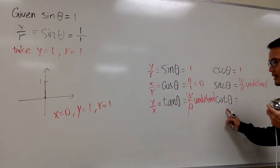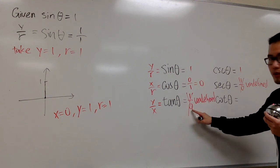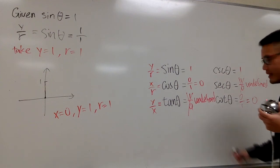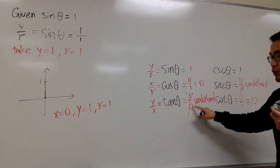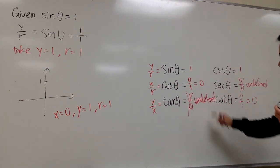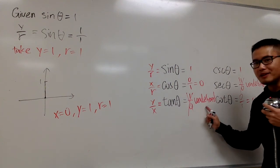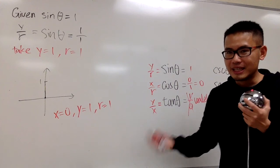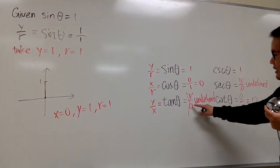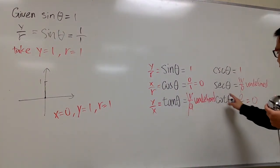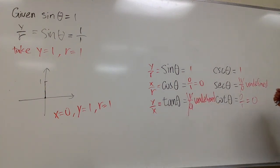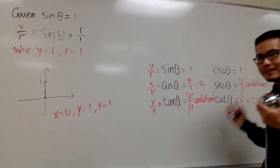Cotangent theta is 0 over 1. So it's 0. Sometimes it may be helpful to still write this down, because when you do the reciprocal, don't look at undefined. Technically, when you do 1 over undefined, it doesn't really make that much sense. So look at this. The definition of cotangent theta is x over y, which is 0 over 1, which is just 0. And that's it.